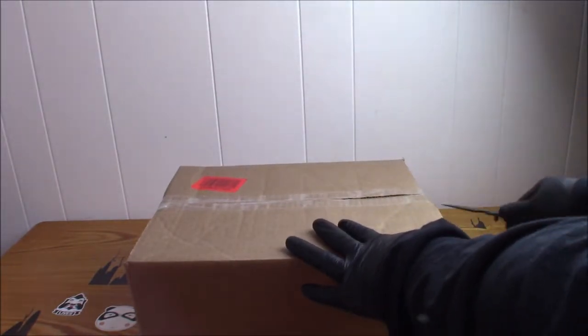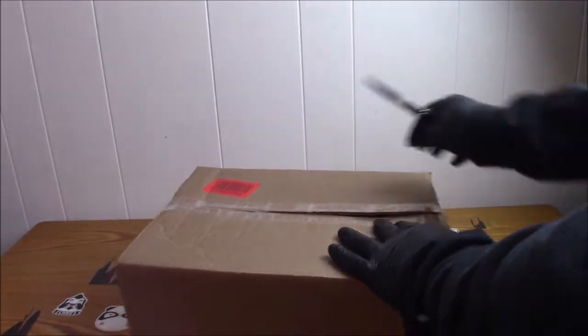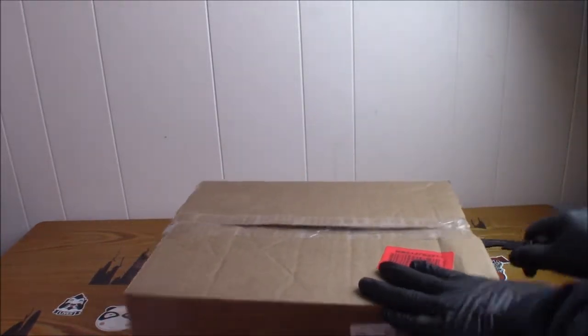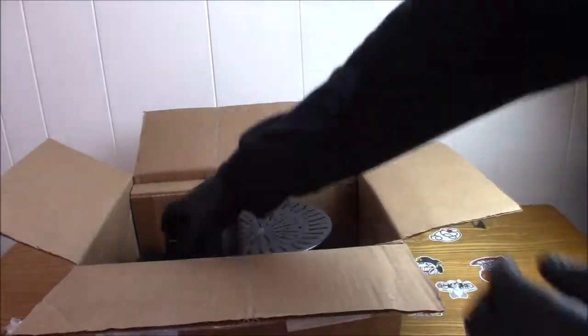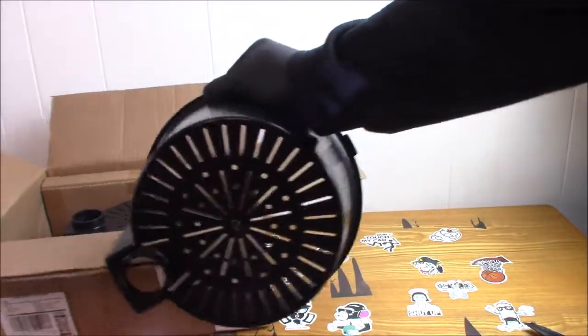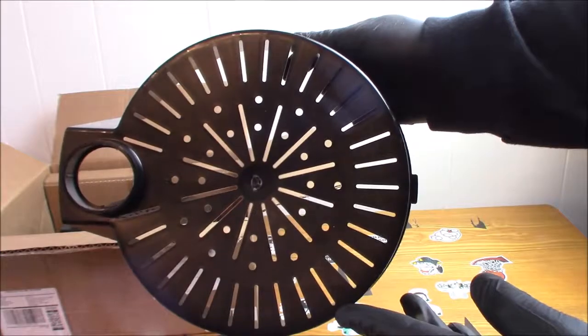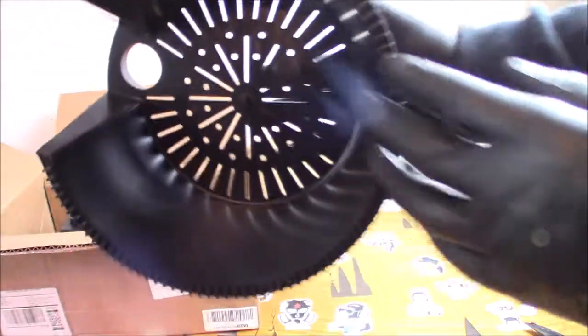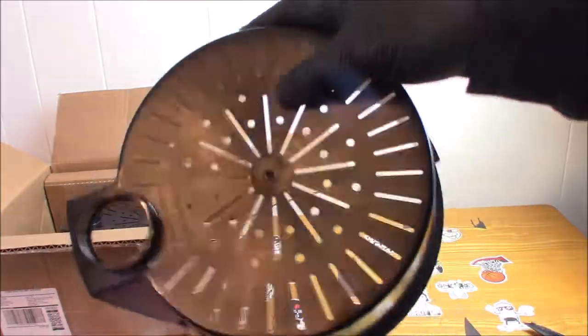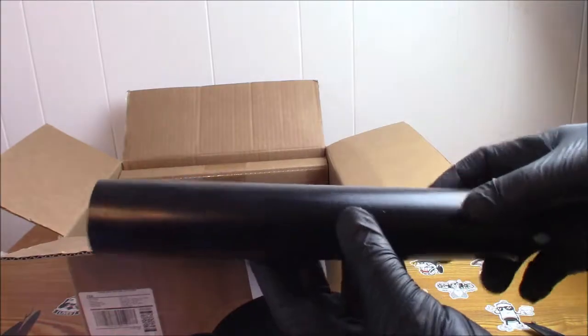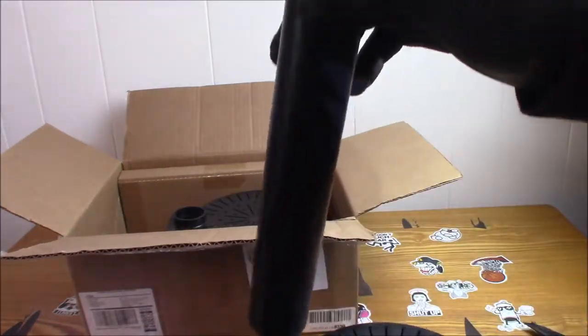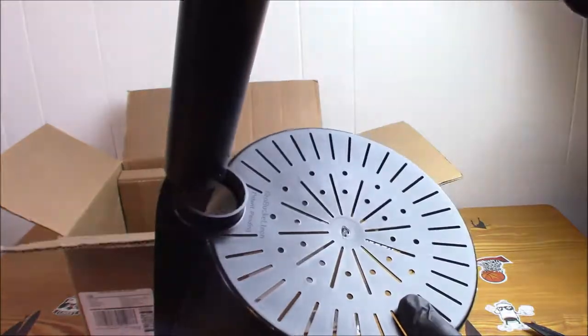This is the Grow Bucket System. This is the base of it, you guys can see, and this fits in a five gallon bucket. You get the base and you also get this tube here. This is a fill tube that attaches right here, and you fill that up with water when you put this in the five gallon bucket.